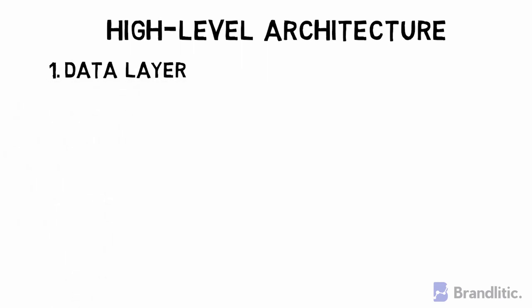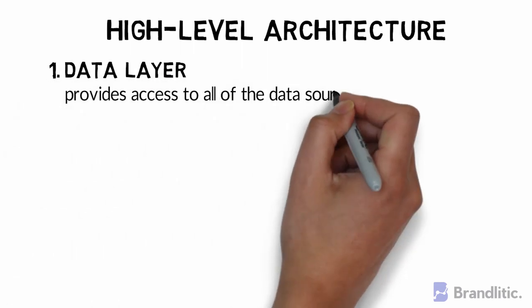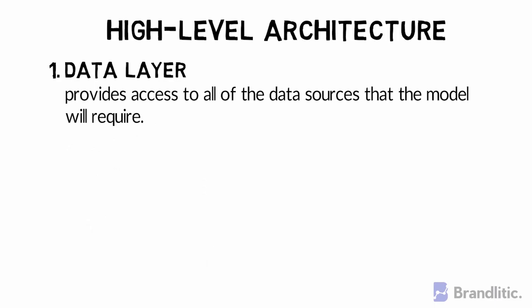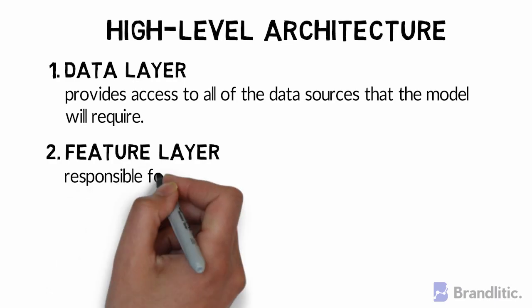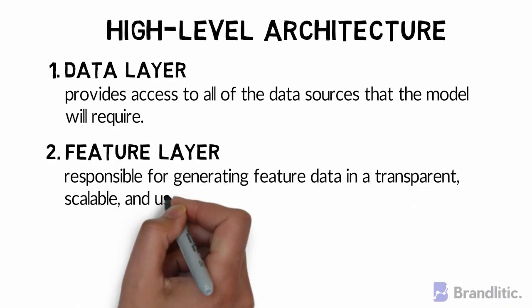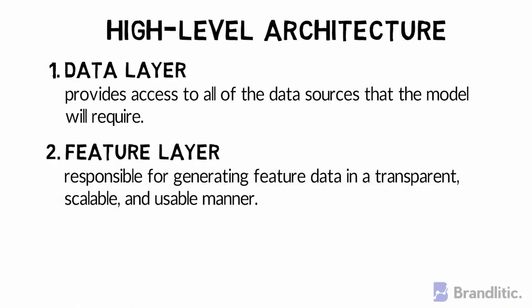Next, let's discuss the high-level architecture of an ML system. At a high level, there are four main parts of a machine learning system. First, the Data Layer, which provides access to all the data sources that the model requires. Second, the Feature Layer, which is responsible for generating feature data in a transparent, scalable, and usable manner.